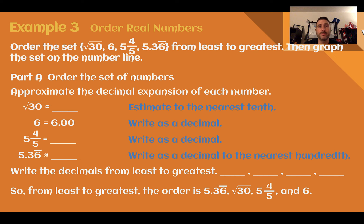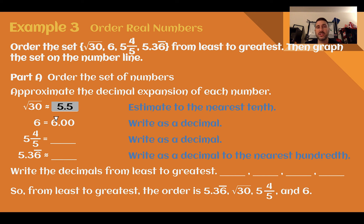Example 3: Order real numbers. Order the set — square root of 30, 6, 5 and 4 fifths, and 5.36 repeating — from least to greatest. Then graph the set on the number line. To do this, we need to put them all in the same form, so let's use decimals. The square root of 30 is about 5.5. 6 is just 6.00. 5 and 4 fifths is 5.8. And 5.36 repeating is already a decimal — we can round to about 5.37.